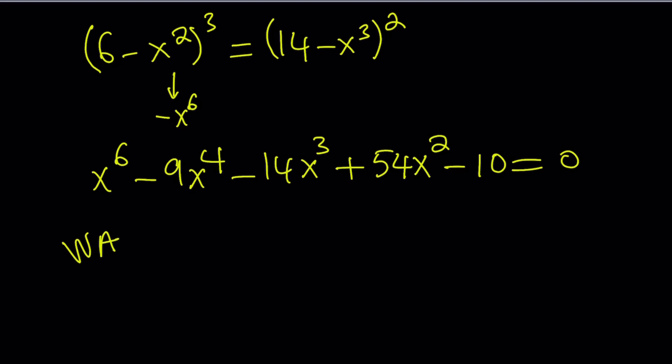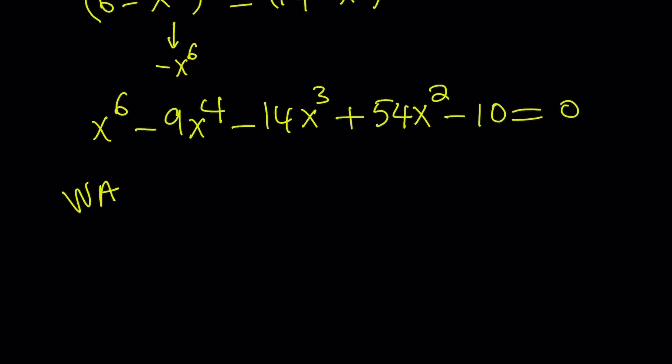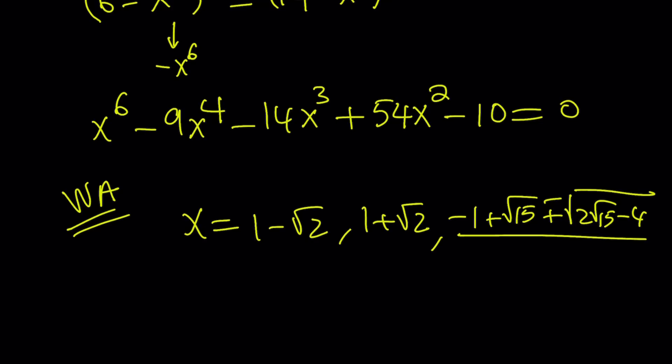So, we're just going to have to consult Wolfram Alpha. And Wolfram Alpha gives us the following. I'm not going to give you a screenshot. I'll just write down all the solutions that I got from there. Wolfram Alpha gives us x equals 1 minus root 2, 1 plus root 2, and then negative 1 plus square root of 15, plus minus the square root of 2 root 15 minus 4, not 14, that should be a 4, all over 2.